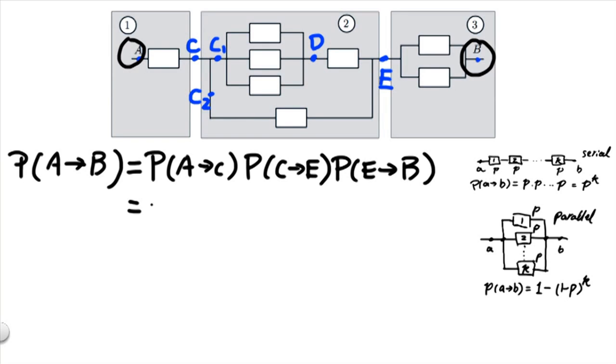Now the probability of A to C is simply P, because the collection contains only one element. And similarly, the probability of E to B is not that hard knowing the parallel structure here. We see that collection 3 has two components in parallel. So this probability will be given by 1 minus (1-P) squared.